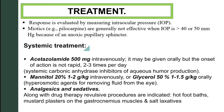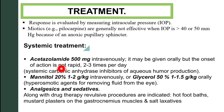For systemic treatment, acetazolamide 500 mg can be given intravenously — it can also be given orally but the onset of action is not as rapid — administered two to three times per day. Acetazolamide is a systemic carbonic anhydrase inhibitor that reduces the production of aqueous humor.